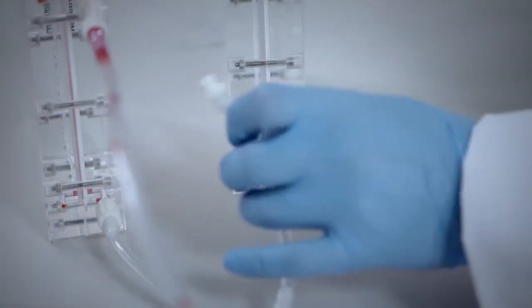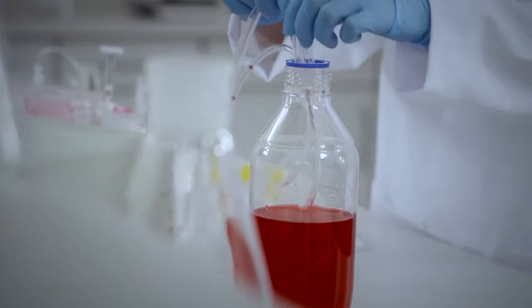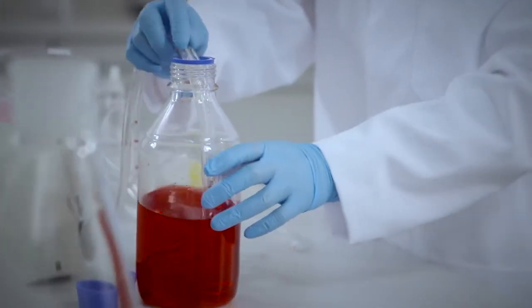Then connect the inlet ports of the VivaFlow 200 cassettes using the branches of the Y connector. At this point, place both outlet tubes and the inlet tube together at the sample reservoir.